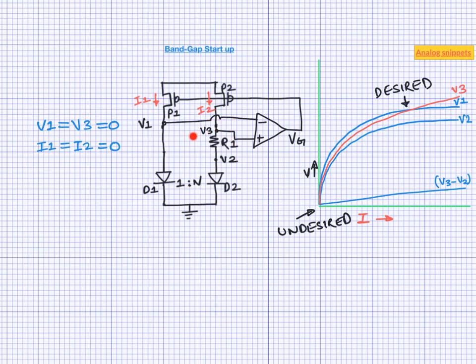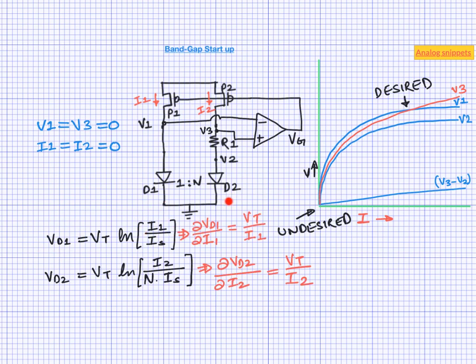The impedance of the resistor is simply its value R1. In order to find the small signal resistance of these diodes, let us write their VI equations again. Now to find the small signal impedance, we simply differentiate the voltages with their respective currents. So we find that impedance of these diodes is simply VT over current into it.